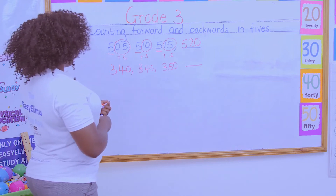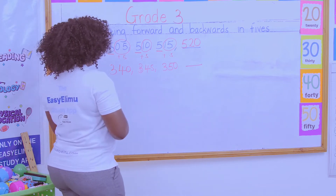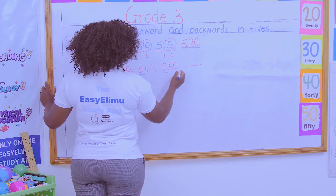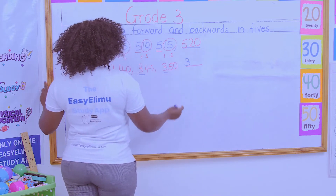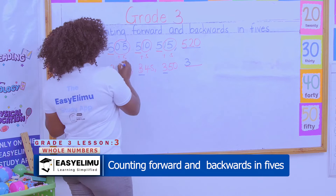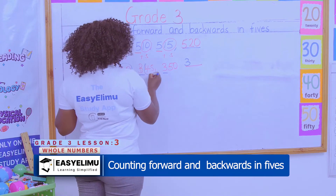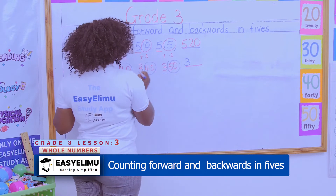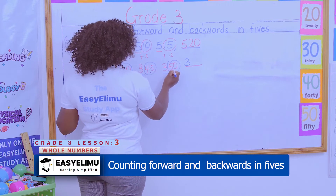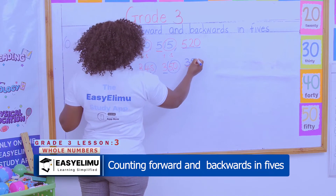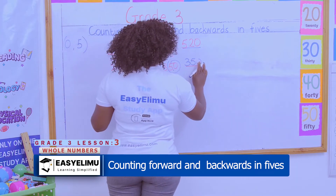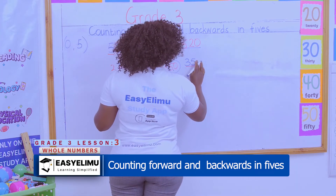Which one do you want to use? I want to use the constant number. Which one is the constant number? The constant number is three, so I write there three. Then you come to the remaining numbers in the tens and ones place value. So we go 40, 45, 50, and my missing number is 55. As simple as that.